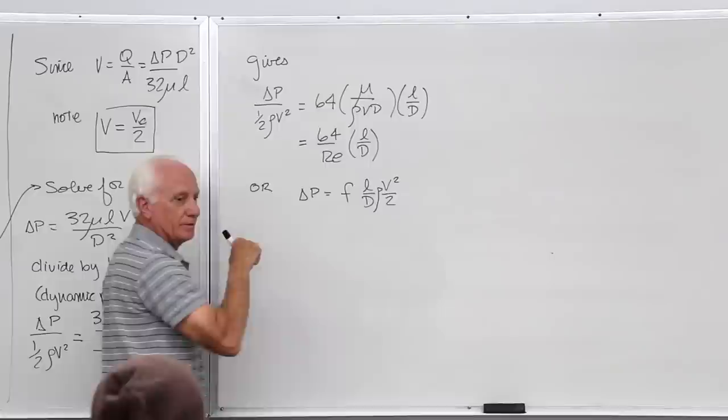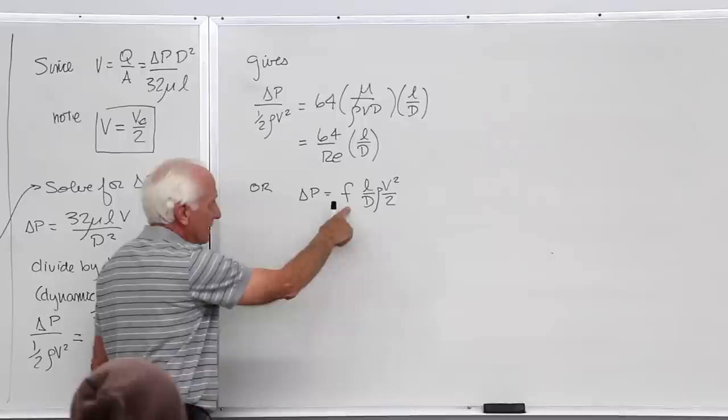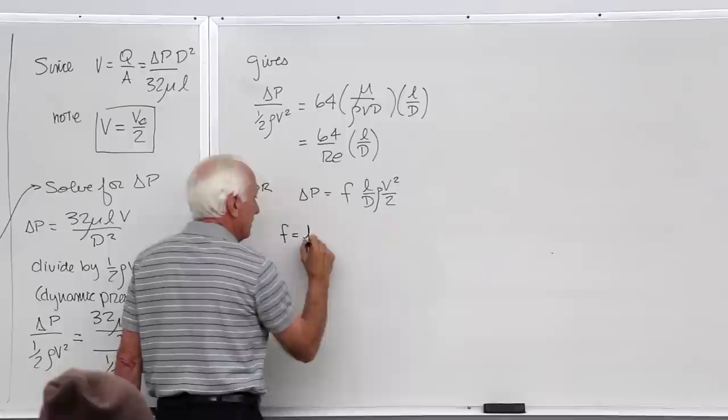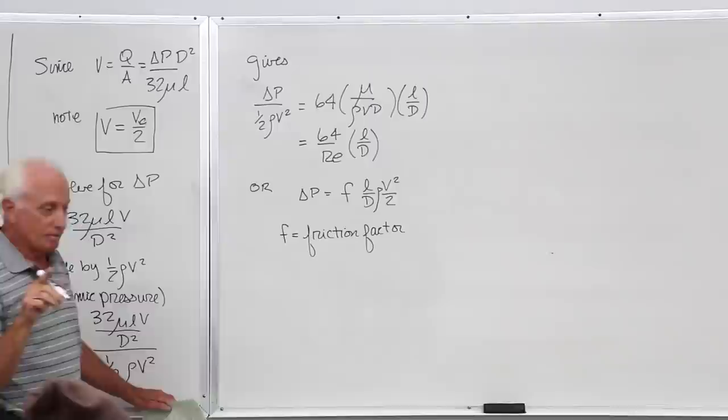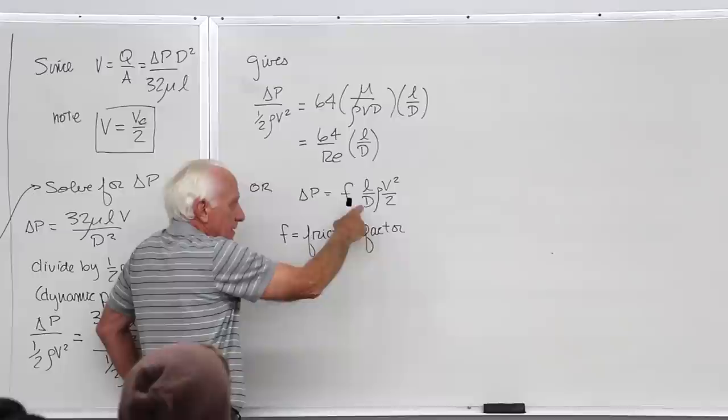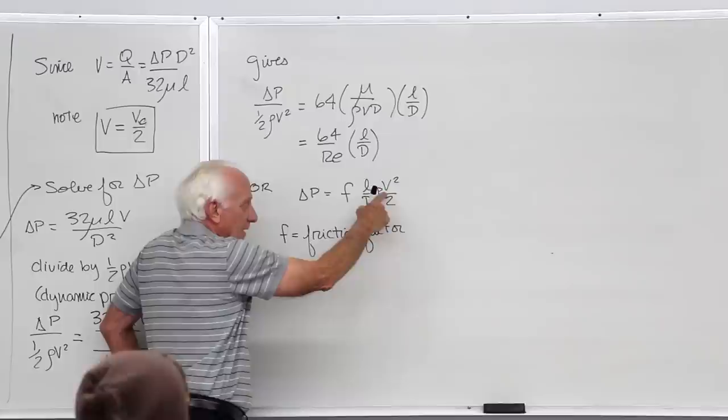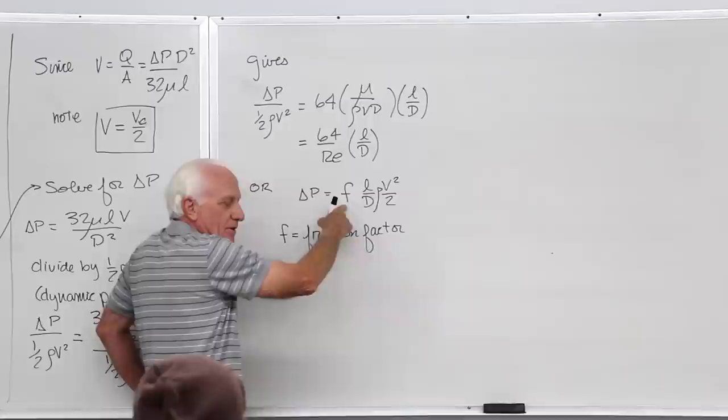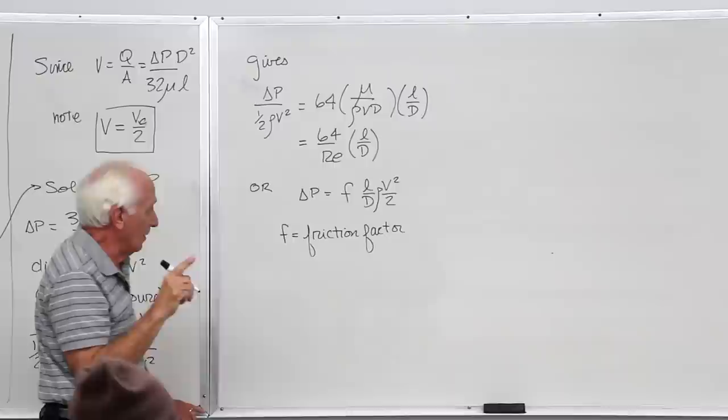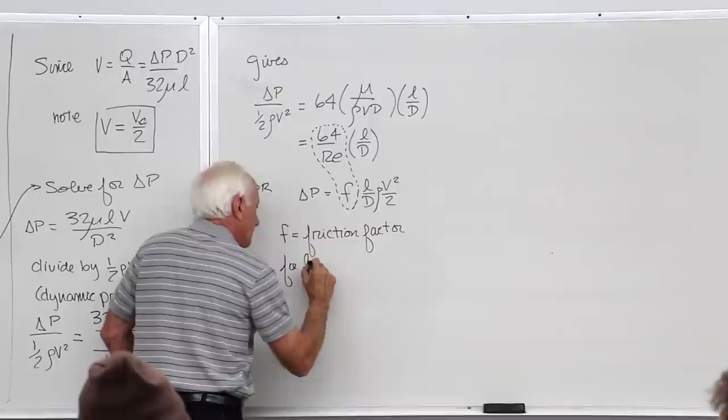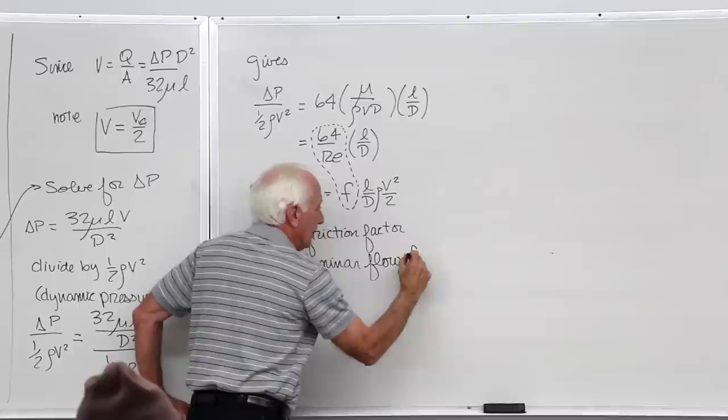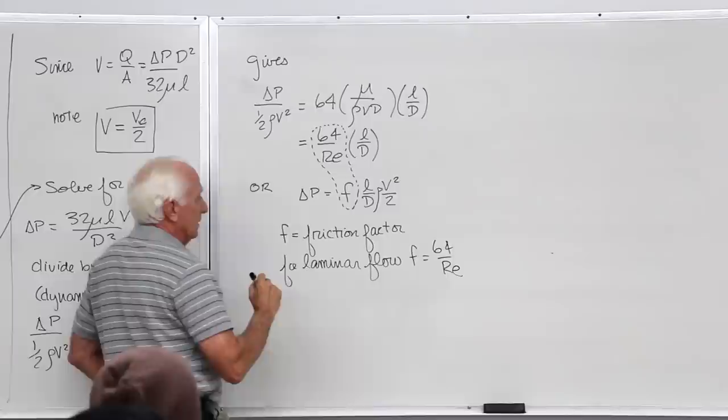When you do that, this is what you end up with. Remember, the Reynolds number is rho V D over mu. Here's delta P. This thing, this is a definition. We define F by this equation. This F is called the friction factor.